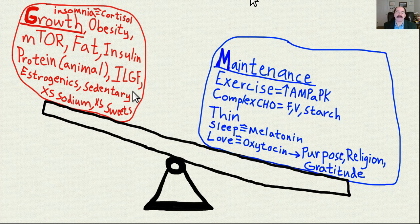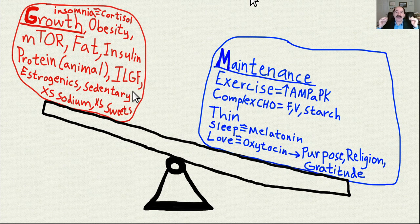The Hayflick limit means that somatic body cells — not from the germline, so not your sperm and egg cells — can only divide about 60 times. Hayflick was the microbiologist who discovered this. After that, they go into senescence and die. So basically, you want to slow down aging, and the way you do it is by slowing down mTOR.